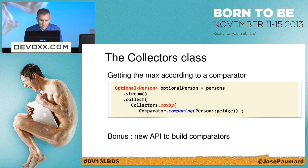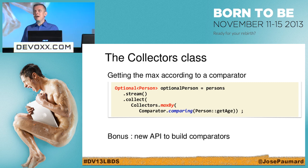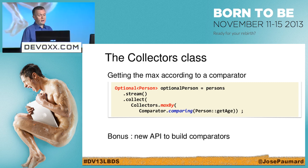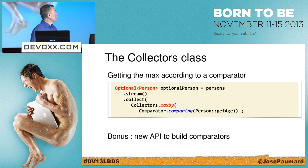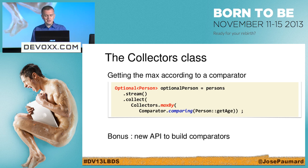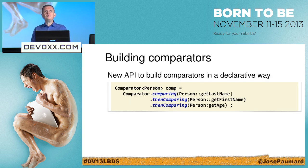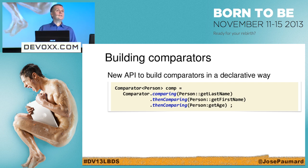If I want to find the oldest person: list.stream().collect(Collectors.maxBy(...)) — maxBy() returns an Optional<Person>. I can give it a Comparator as a parameter. There's also a bonus in the updated Comparator API: to build a comparator I now only need to write something like Comparator.comparing(Person::getLastName).thenComparing(Person::getFirstName).thenComparing(Person::getAge). This is very nice — and I also have reversed() if I want to reverse the order. Really great.